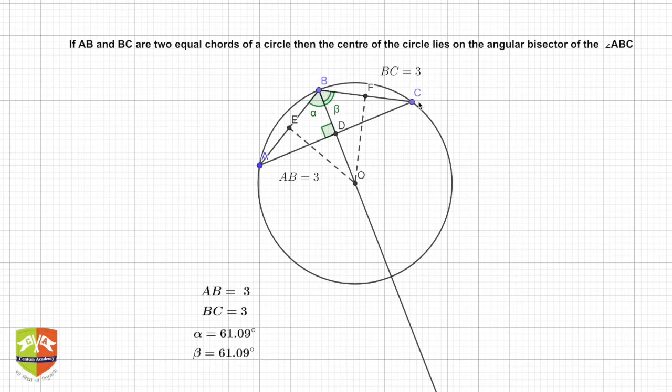We have tried to bisect this angle ABC. If you see, alpha is equal to beta. You can see the values over here: 61.09 in this configuration, and beta also 61.09. AB and length BC are given as three.